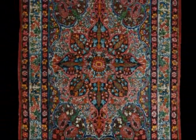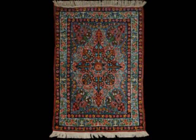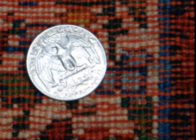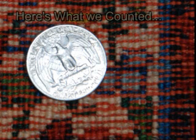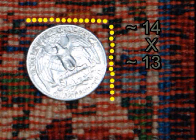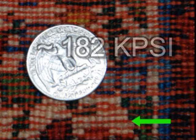Our curveball rug is back. I'm going to leave this one up to you to figure out what the knot count is. Taking a closer look at the reverse side, go ahead and count them. Here's what we counted: approximately 14 knots going horizontal and approximately 13 knots going vertical. The reason this is a curveball piece is because what you see as the red horizontal lines are actually the weft. The weft is part of the construction of the rug; however, they are not supposed to be counted as individual knots.